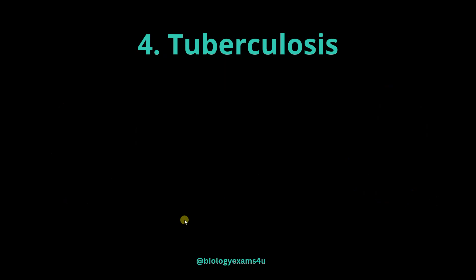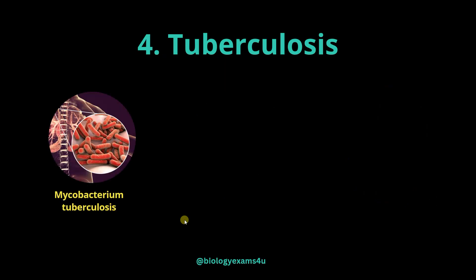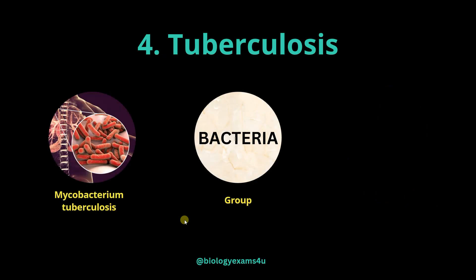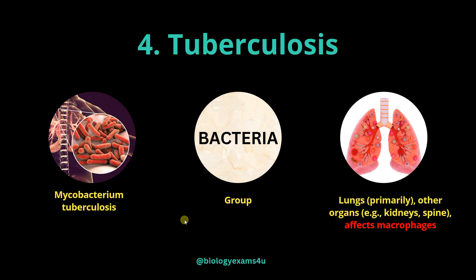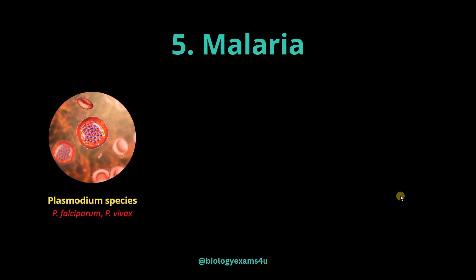Tuberculosis is caused by Mycobacterium tuberculosis, which is a bacterium that primarily affects the lungs. Later, it spreads to other organs such as kidney and spine. This bacterium infects and manipulates macrophages, the immune cells responsible for engulfing and destroying pathogens. Malaria is caused by a parasite, Plasmodium.